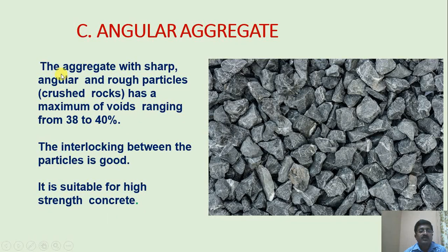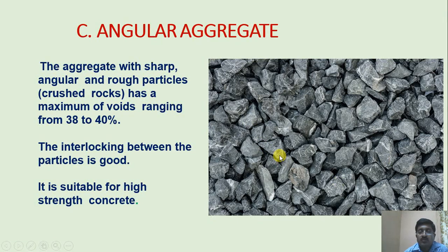Angular aggregate. Aggregates with sharp, angular and rough particles, such as crushed rocks, have a maximum of voids ranging from 38 to 40%. The interlocking between particles is good and it is suitable for high strength concrete. These aggregates are preferred because they bind well with fine aggregates and cement, resulting in better interlocking and good compressive strength.